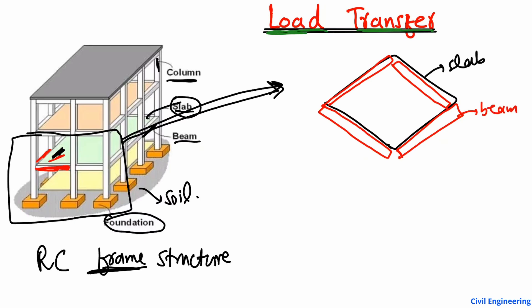Whether it is a one-way slab or two-way slab depends on the design condition. Below the slab we have columns — the vertical members. Here we have four columns to resist the vertical load. Below the columns we have another member.